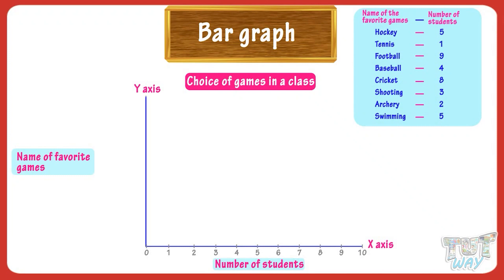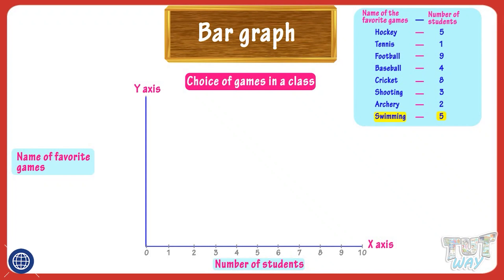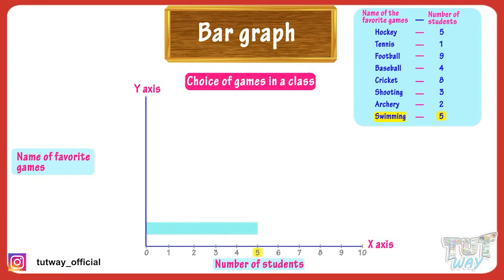The y-axis will show the names of games, and we will relate them to the number of students whose favorite game each one is. For example, it's given that 5 students like swimming the most, so we make a rectangular bar on the y-axis up to the mark of 5.